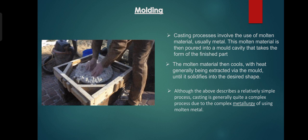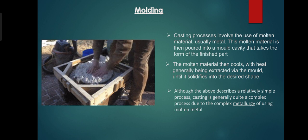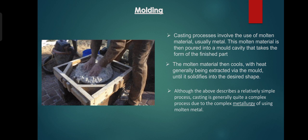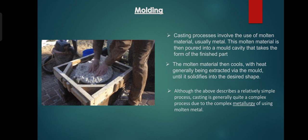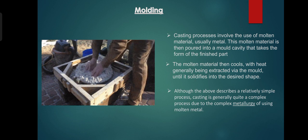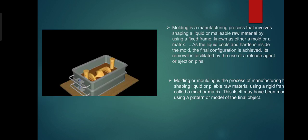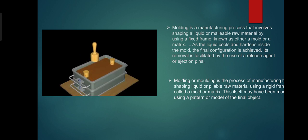Removing the pattern leaves the mold cavity, which is a primary cavity. In this picture this process is shown. The molten material then cools, with heat generally being extracted by the mold, until it solidifies into the desired shape. Here we can see one video about this process. Molding is a manufacturing process that involves shaping a liquid or malleable raw material by using a fixed frame known as either a mold or matrix.